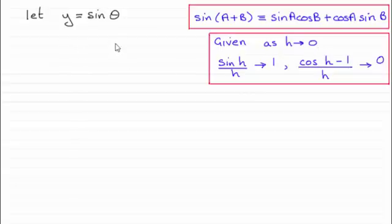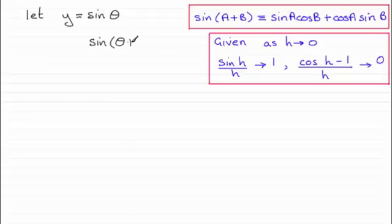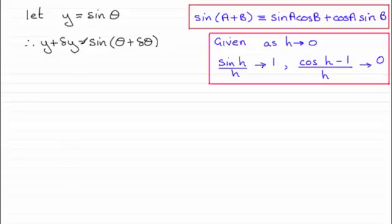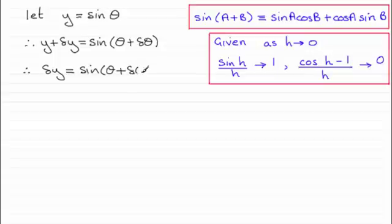So let's start. What we do is increase the angle theta by a small amount, delta theta. So what we have is the sine of the angle theta plus delta theta, and y is going to increase by a small amount delta y. We've therefore got y plus delta y equals the sine of theta plus delta theta. Next, subtracting y from both sides gives delta y equals the sine of theta plus delta theta minus y.